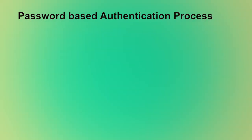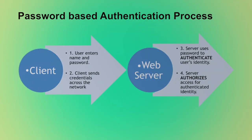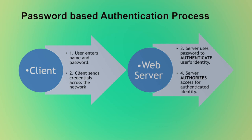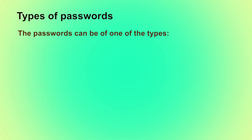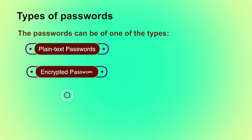Let us now look at the password-based authentication process. This figure shows how a client and web server interact using a password-based authentication mechanism. First, the user enters his name and password. Then the client sends the name and password to the server across the network. The web server uses the password to authenticate the user's identity and only authorizes access for the authenticated identity. Passwords can be of several types: plain text passwords, encrypted passwords, one-time passwords or hashed passwords.